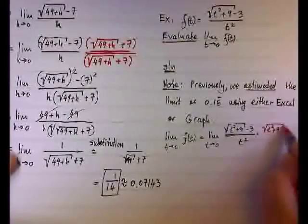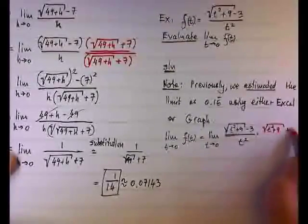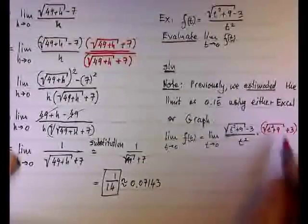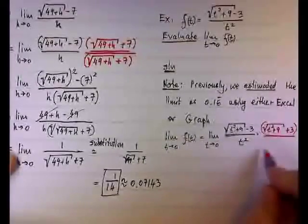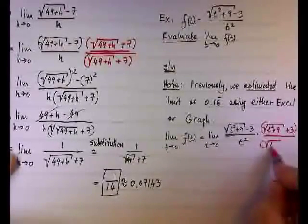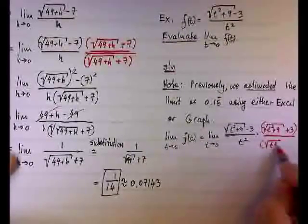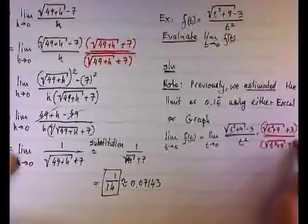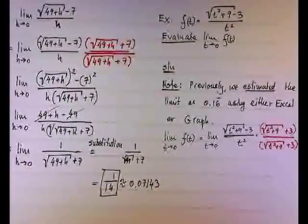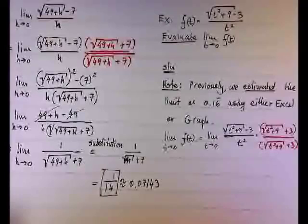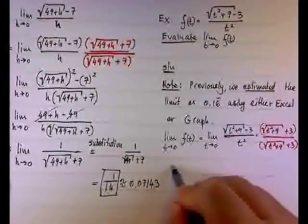The conjugate, of course, is the square root of t squared plus 9. While we have minus 3 here, we're going to have plus 3 here. And if I multiply the numerator, I have to multiply the denominator as well. So from this point on, we are following the same procedure. Go ahead and do it. You don't have to wait on me.